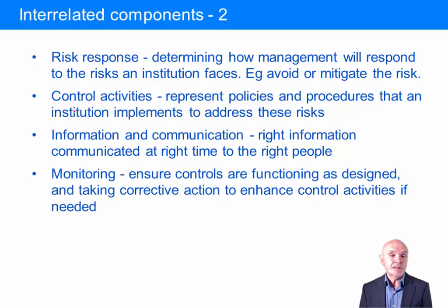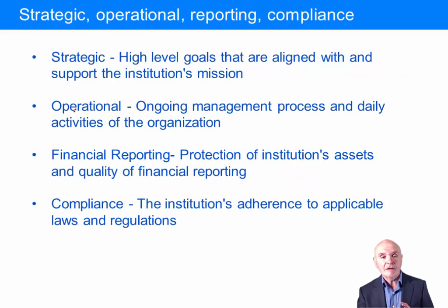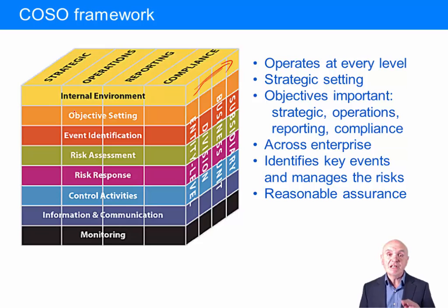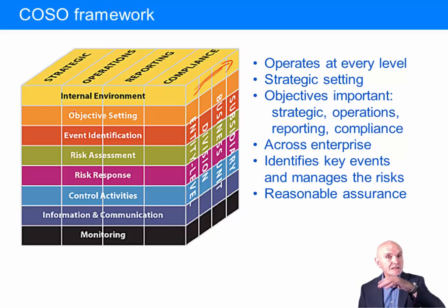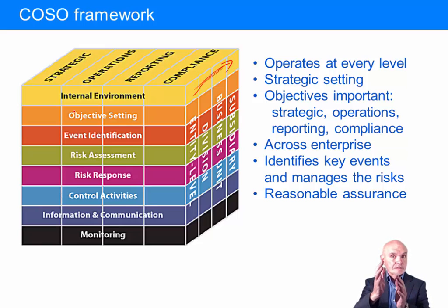Finally, there is monitoring — making sure the controls and procedures are functioning, that risks are kept up to date, and that responses are kept up to date. We want to improve our risk management where possible. So those eight items are: internal environment, objective setting, event identification, risk assessment, risk response, control activities, information and communication, and the overall overarching monitoring.